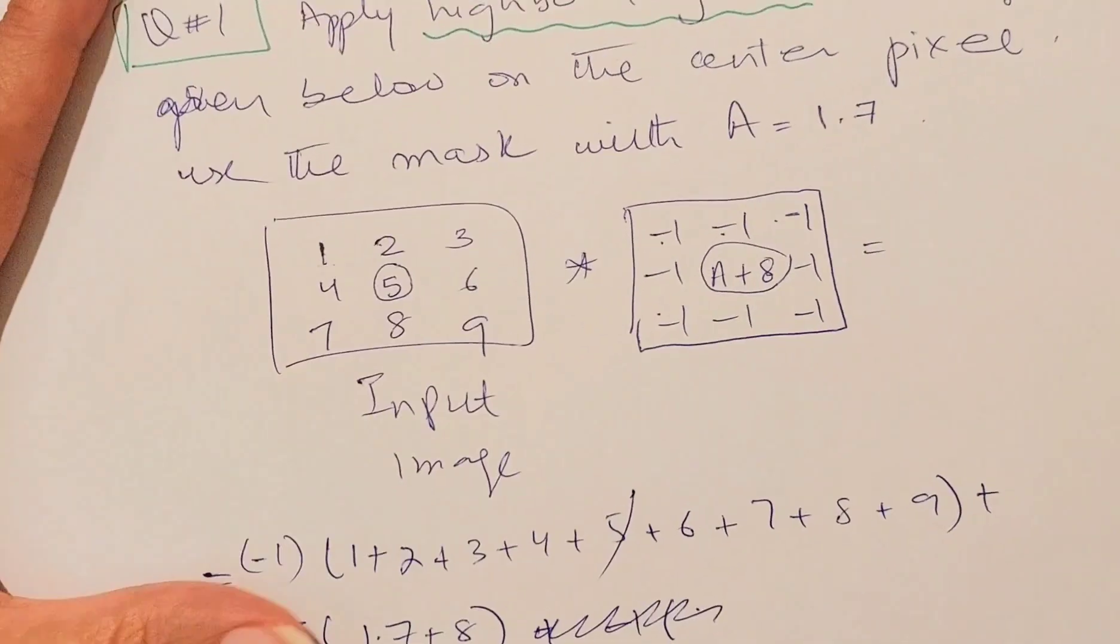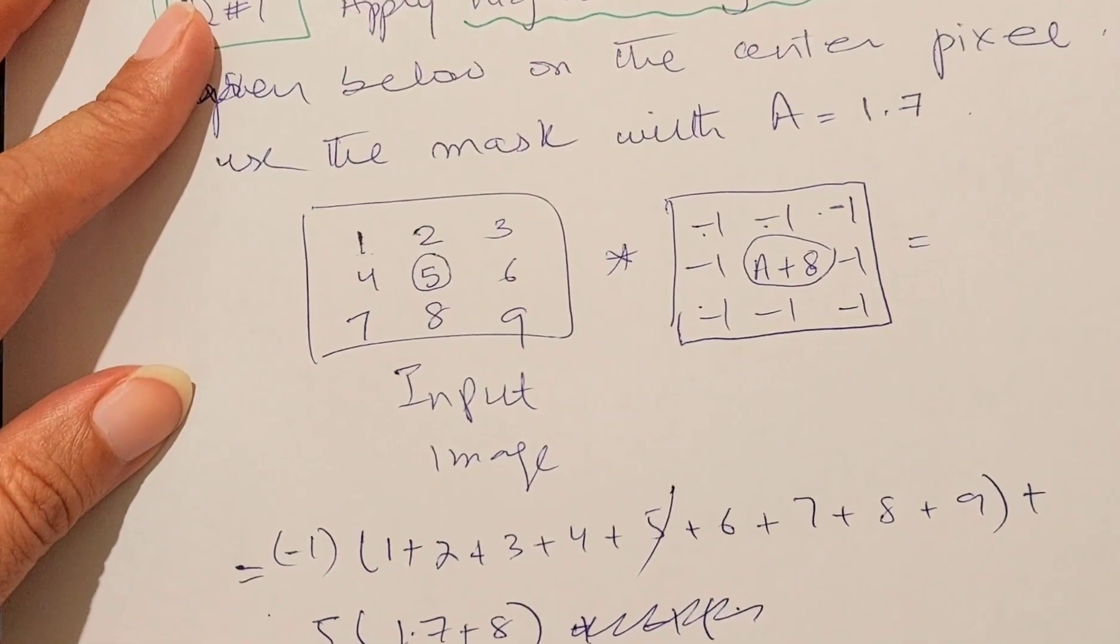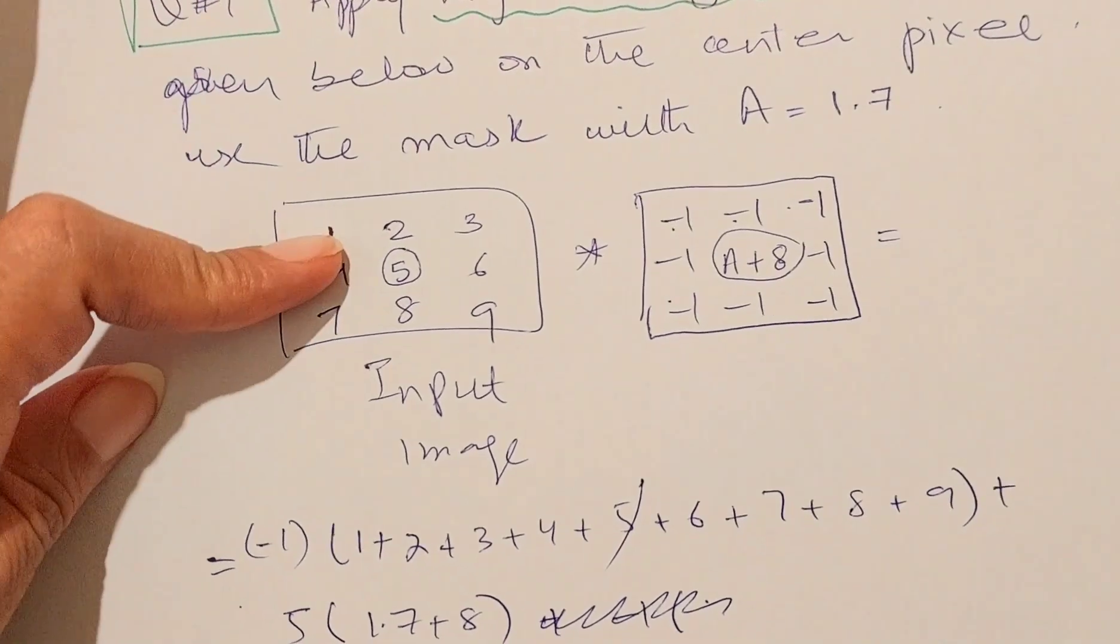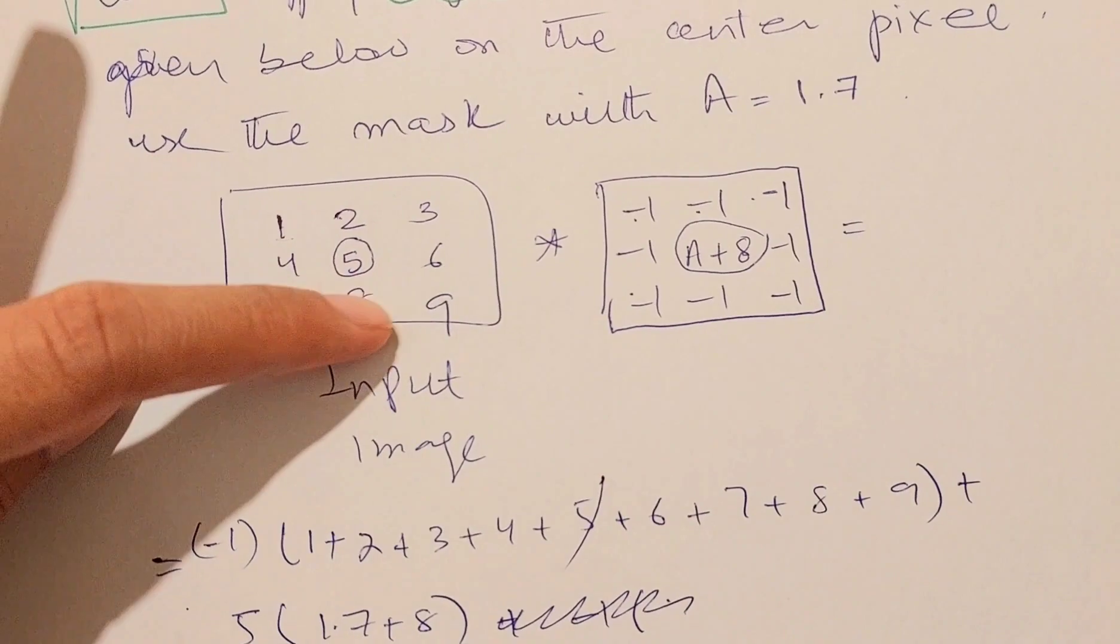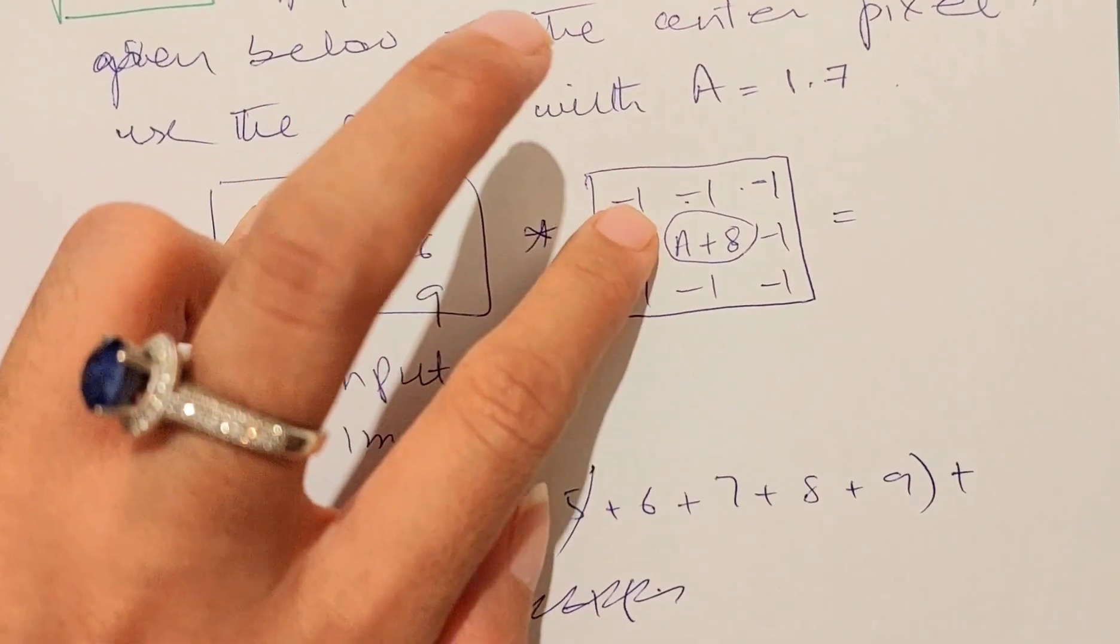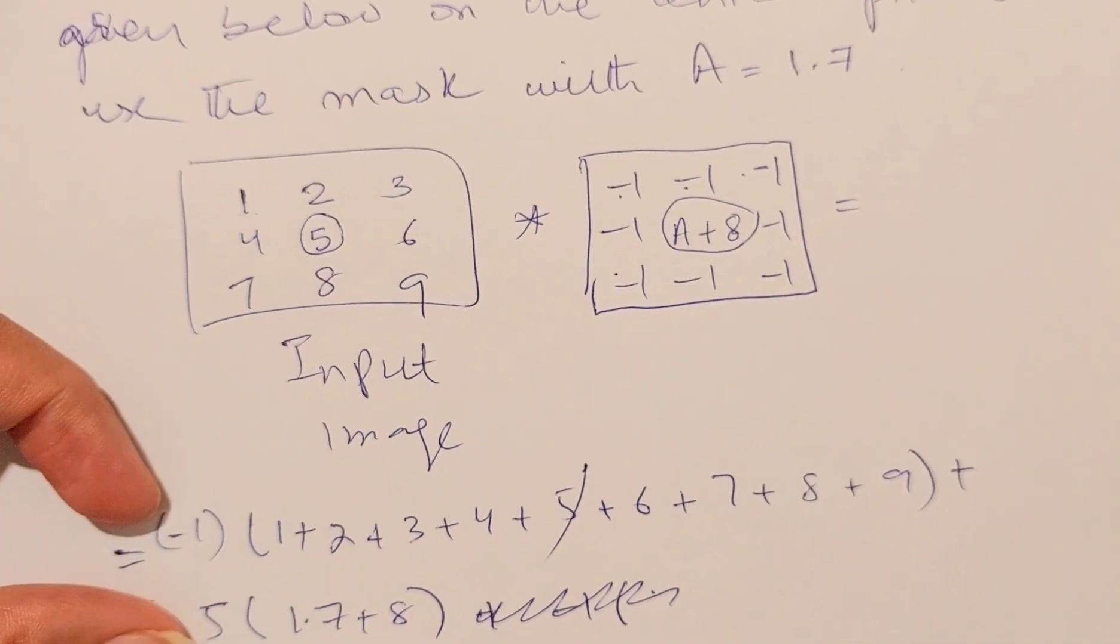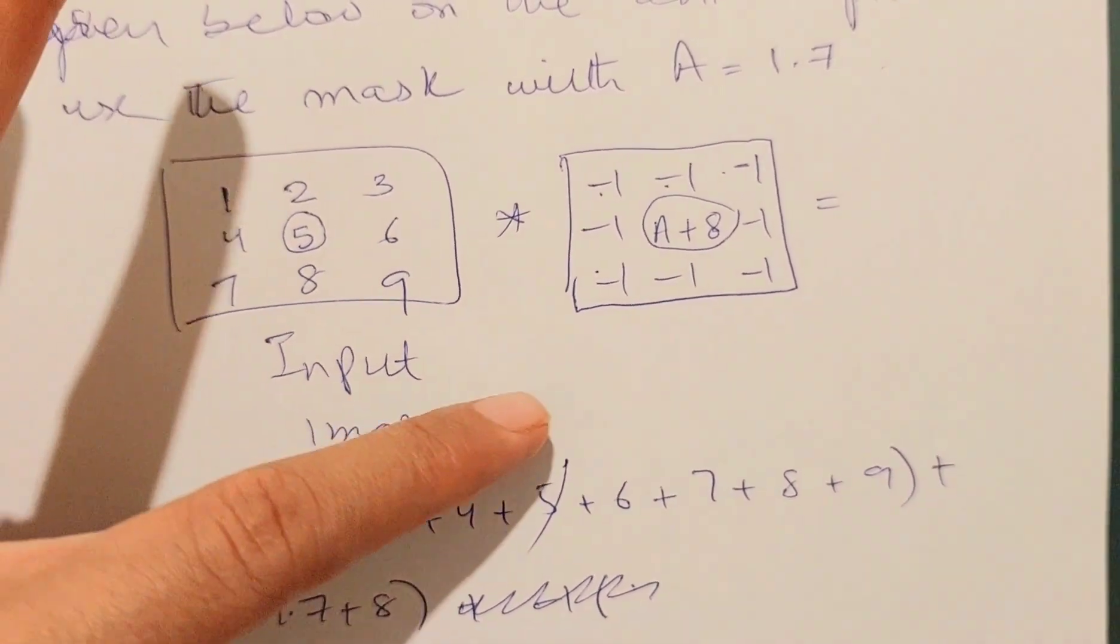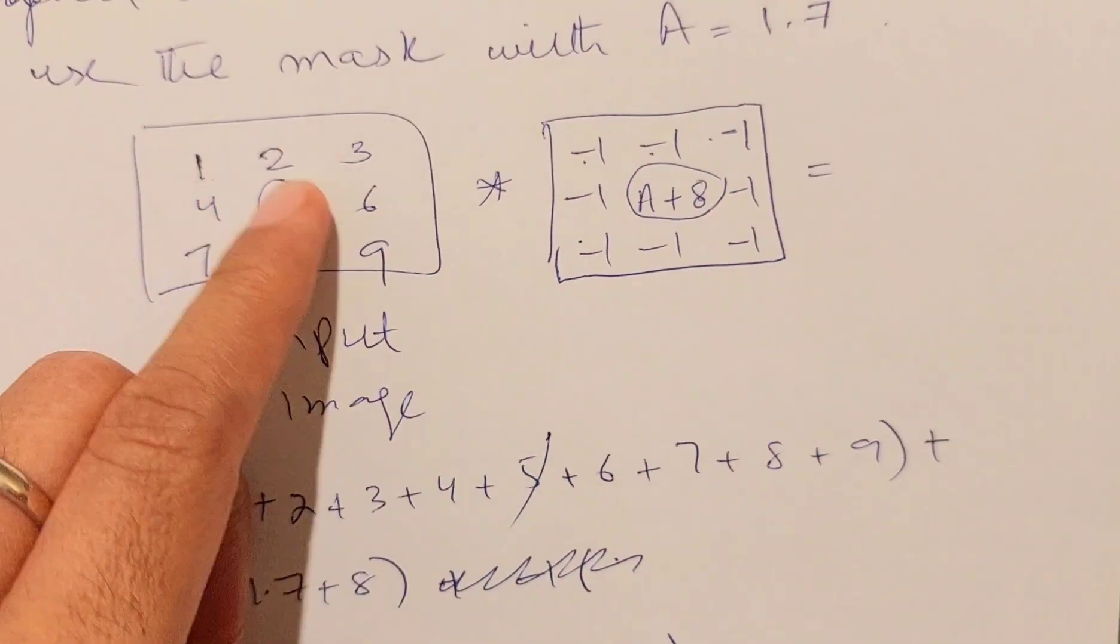We will simply do a multiplication operation, which is a pixel to pixel multiplication. One, two, three, four, six, seven, eight, and nine are all multiplied with similar type of value from the mask which is negative one. We are taking negative one common and adding all the other pixels together except five. With five we are multiplying A+8, and we are placing the value of A as 1.7.